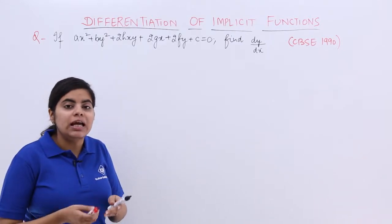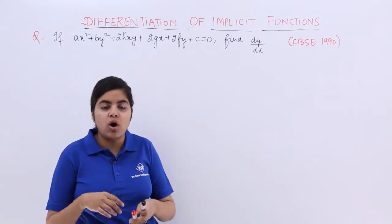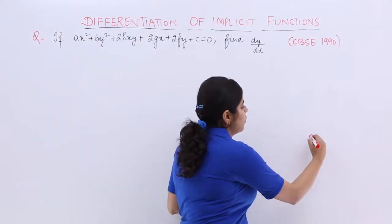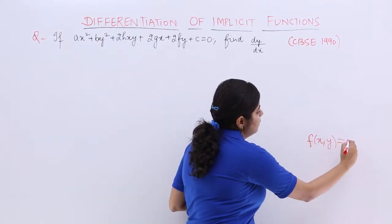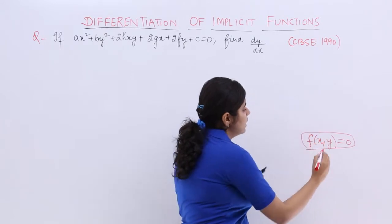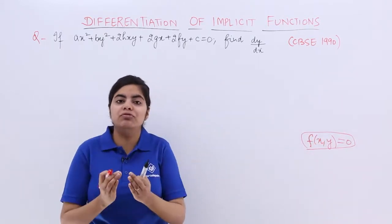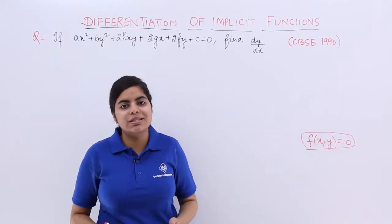An implicit function is of the form f(x,y). That means it is something like this, as we did in the previous video, wherein you have x and y involved in one expression term and you cannot separate it.